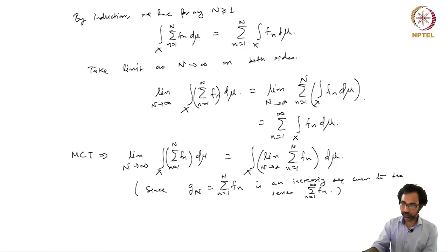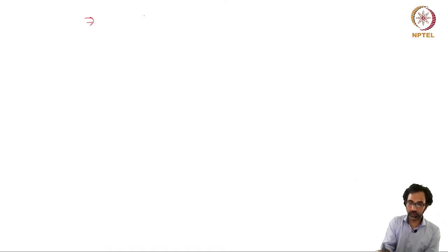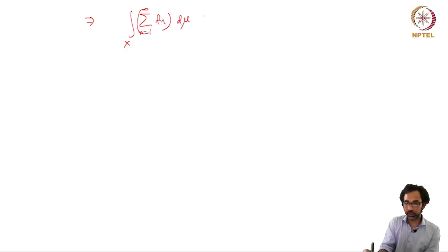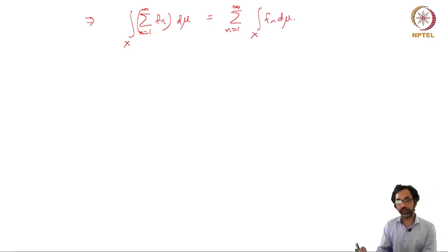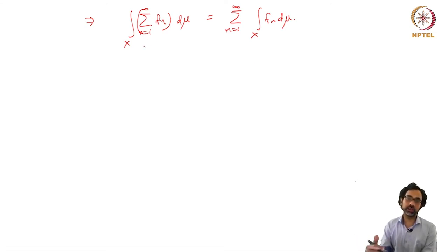From these two equations we get the result: the integral of the sum from n equals 1 to infinity of fn d-mu equals the sum from n equals 1 to infinity of the individual integrals of fn d-mu. This is Tonelli's Theorem. Note it was only allowed because all fn's are unsigned measurable functions, which makes the partial sums a non-decreasing sequence so that we can apply the Monotone Convergence Theorem.